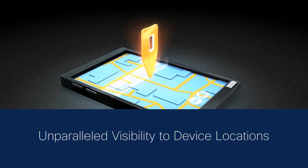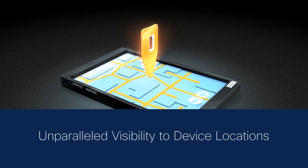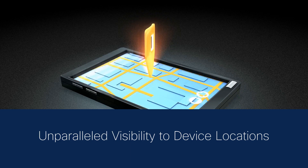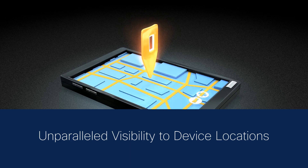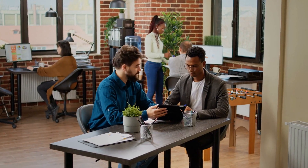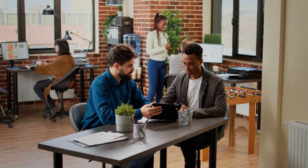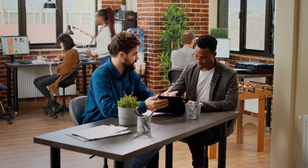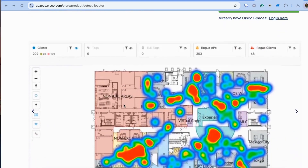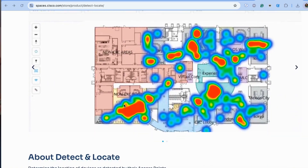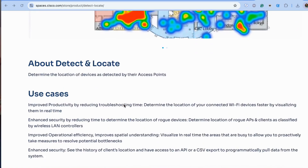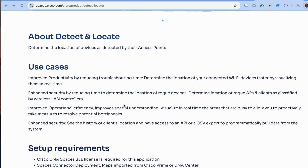Cisco Spaces Detect and Locate is an essential tool in your network management arsenal, providing unparalleled visibility into device locations. With this knowledge, you're better equipped to manage your Wi-Fi network efficiently and securely. We hope you now feel empowered to streamline the devices detected by your access points and enhance the efficiency of your workspace with this innovative feature.